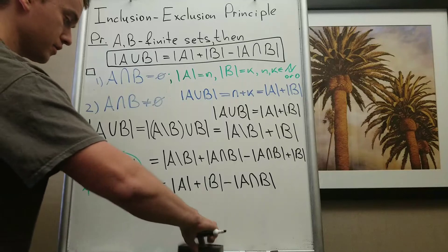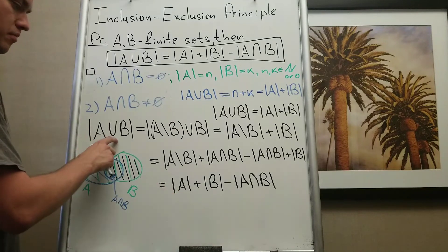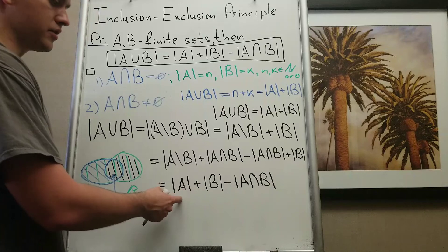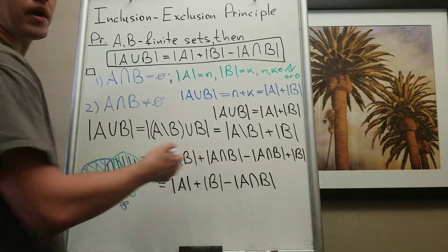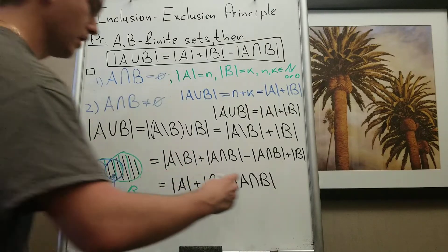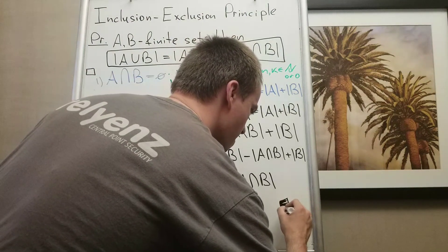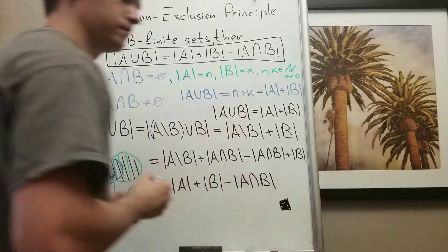So you can see I start with A union B and I end up with cardinality of A plus cardinality of B minus A intersection B. And we are done.